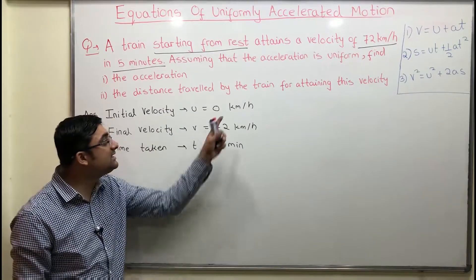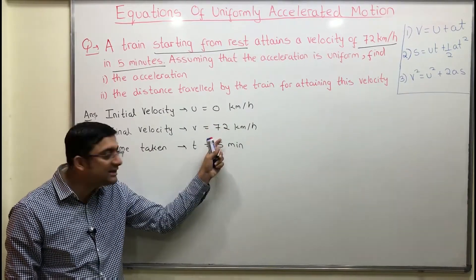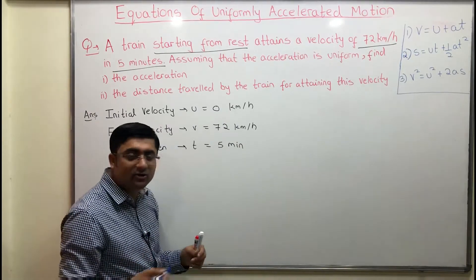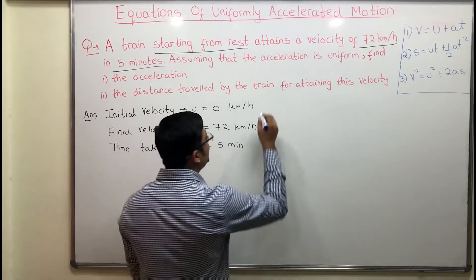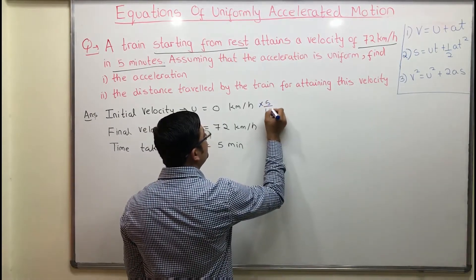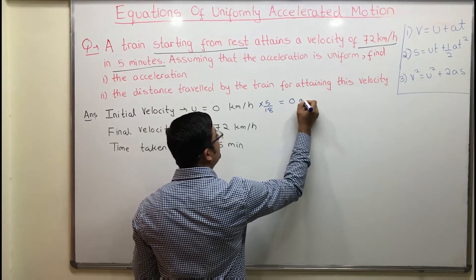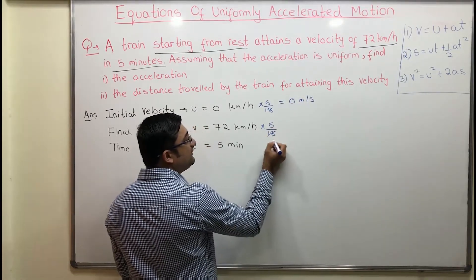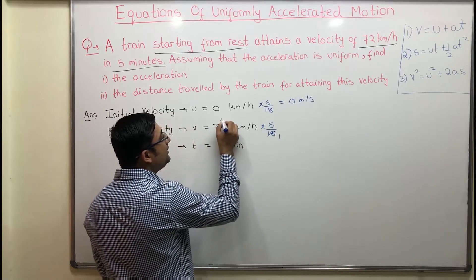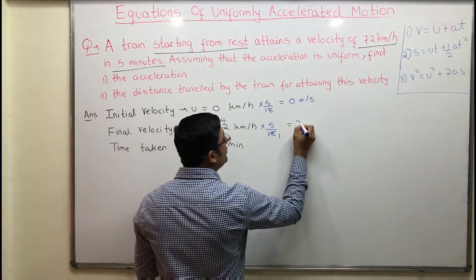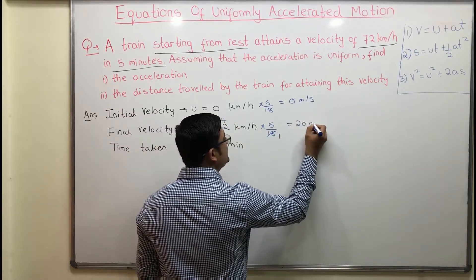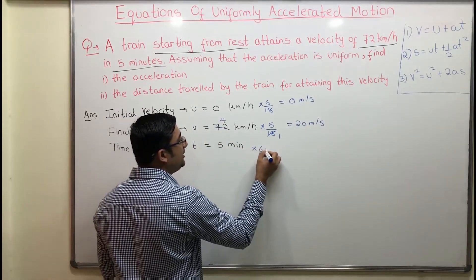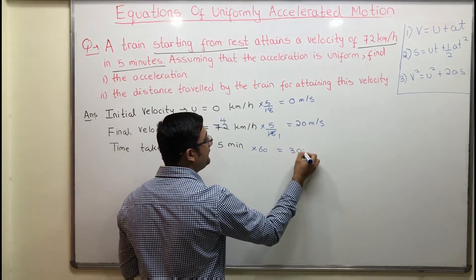Convert u and v into meters per second and time into seconds. To convert kilometers per hour to meters per second, multiply by 5/18. So 0 into 5/18 is 0 meters per second. 72 into 5/18 gives 20 meters per second. To convert time, multiply minutes by 60, so 5 minutes is 300 seconds.